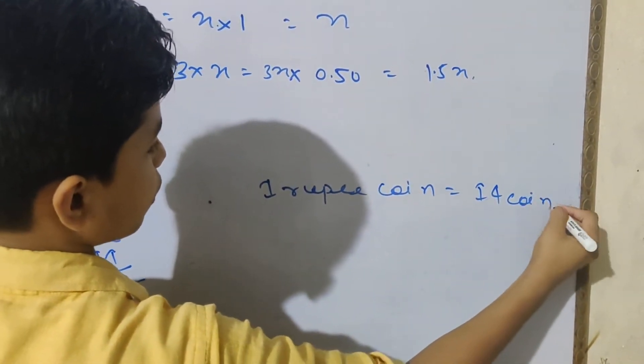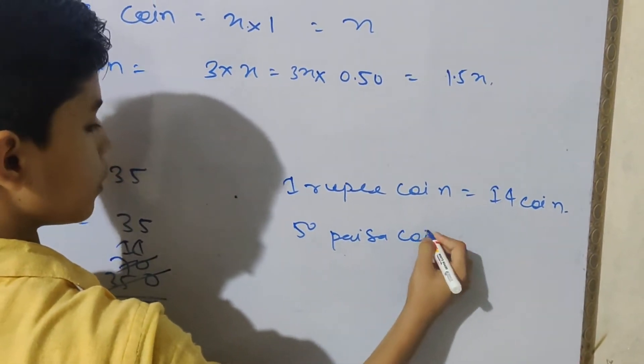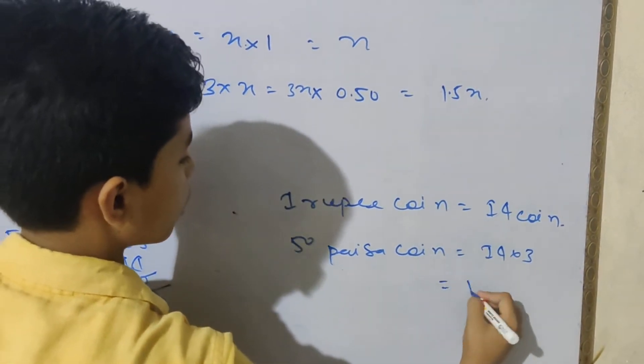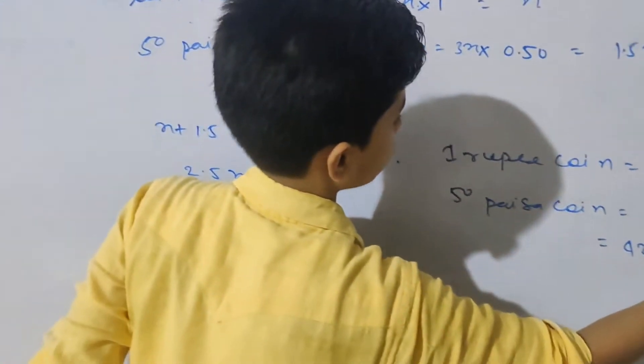So x equals 14. So 1 rupee coin is equal to 14 coins, and 50 paisa coins equal 42 coins, 3 times 14.